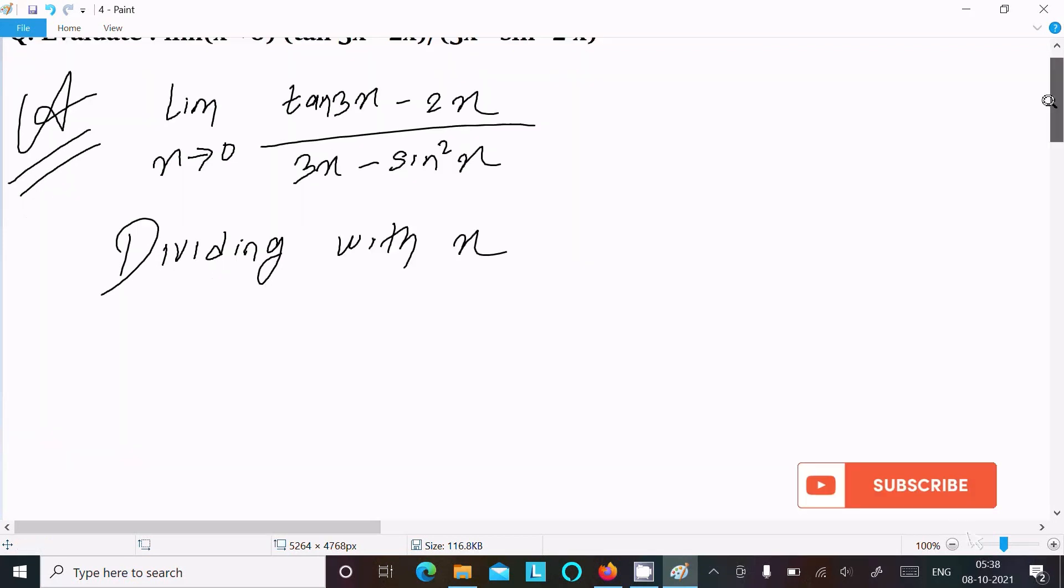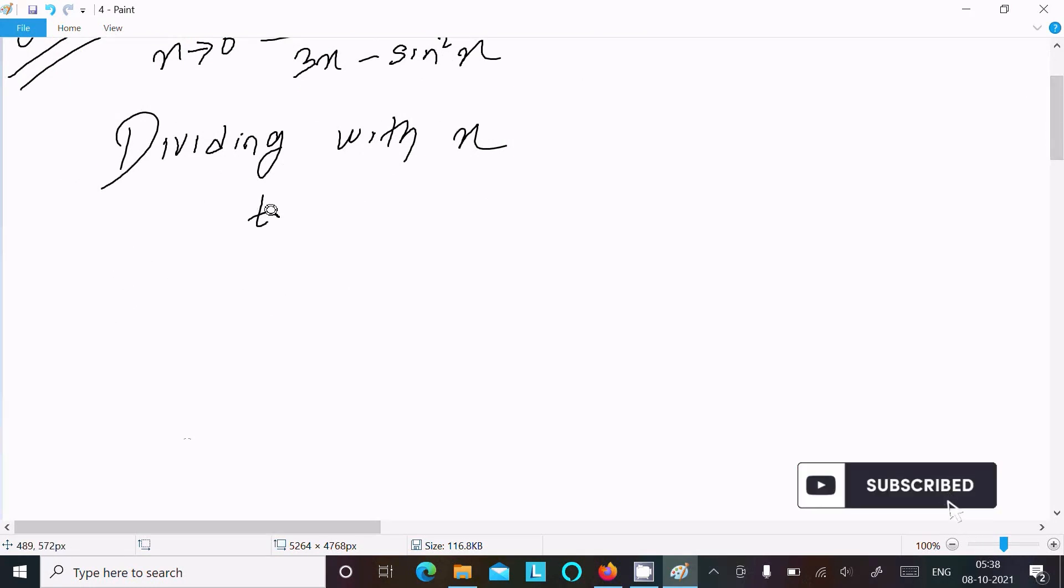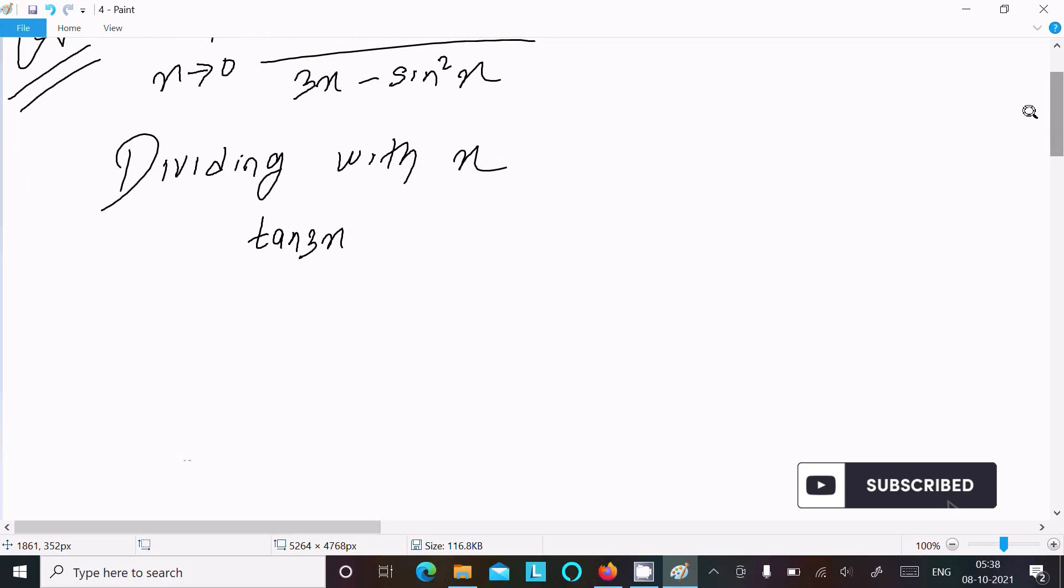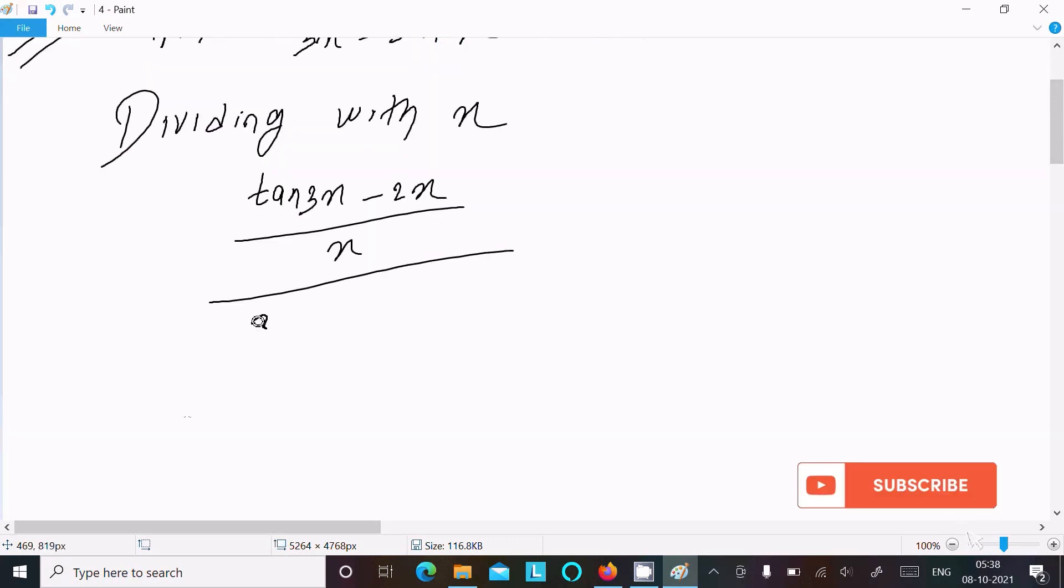So here we can write tan 3x minus 2x divided by x, and here 3x minus sin squared x divided by x, limit x tends to 0.